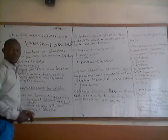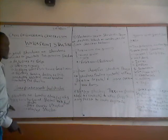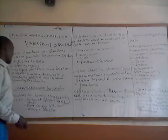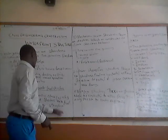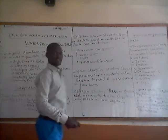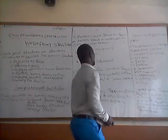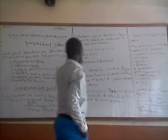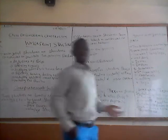Now we talk about classifications of waterfront structures. Waterfront structures are broadly classified into three categories: sheltered waterfront structures, stable shoreline waterfront structures, and wharf waterfront structures. Harbored sheltered waterfront structures are structures which are constructed to create sheltered harbors at the sea.